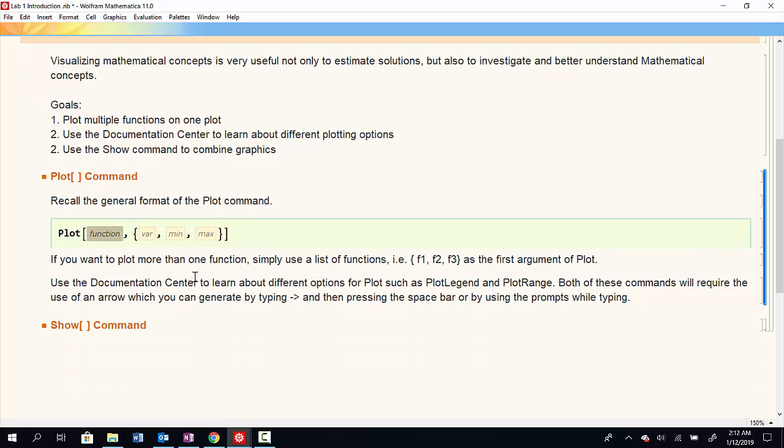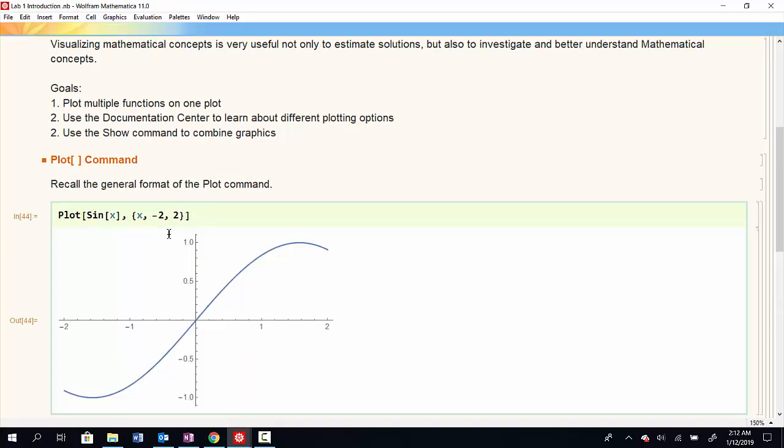So we've already seen the general form. We'll have to plot some function, so here we can type in some function that we want to plot. We have to identify what the variable is, and then over what range we'd like to plot that variable. So here we'll go from negative 2 to 2 for instance, and we'll have this plot.